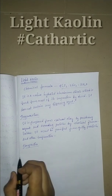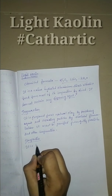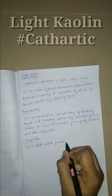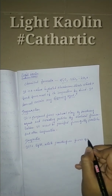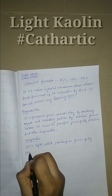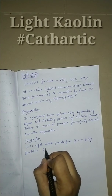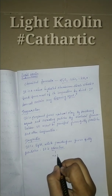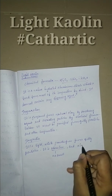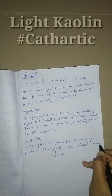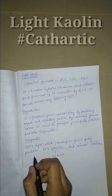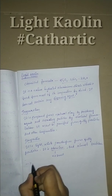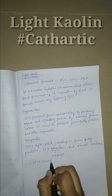Properties: Light kaolin is a light white powder, free from gritty particles. It is odourless — meaning without smell — and almost tasteless, with no taste. It is smooth to touch.